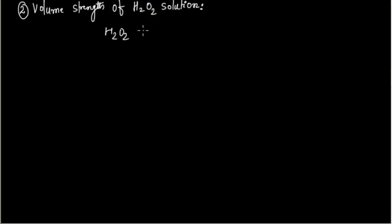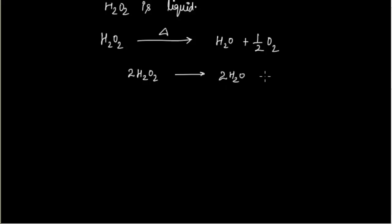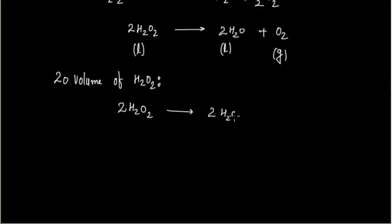H2O2 is a liquid. When we heat H2O2 solution, it gives H2O and O2. The balanced equation is: 2H2O2 → 2H2O + O2. H2O2 and H2O are liquids; oxygen is a gas. The meaning of 20 volume H2O2 is: if I take 1 volume of H2O2, it will give 20 volumes of O2 at STP.